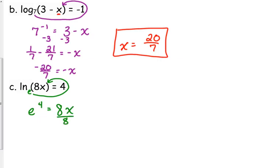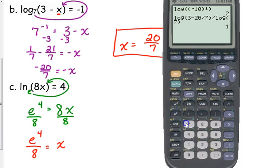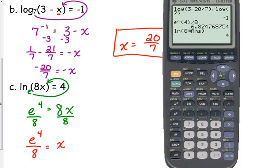Now, E is an irrational number. So if we raise that to the 4th power, it's just going to give us a nastier, bigger, irrational number. So just leave it as E to the 4th divided by 8. And if I were to check that in my calculator, I would go ahead and type in the E to the 4th, close the parentheses, divide it by 8, and then do the natural log of 8 times my answer. And I do get 4.